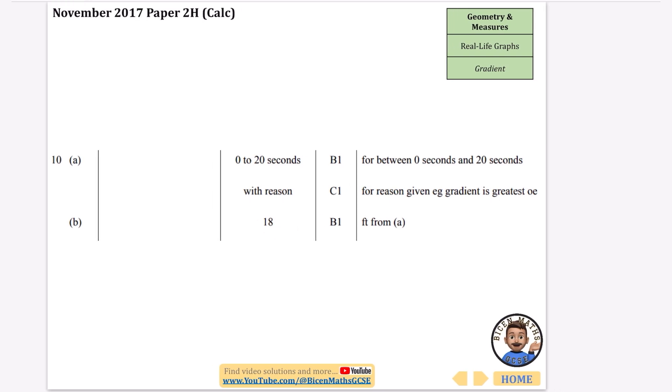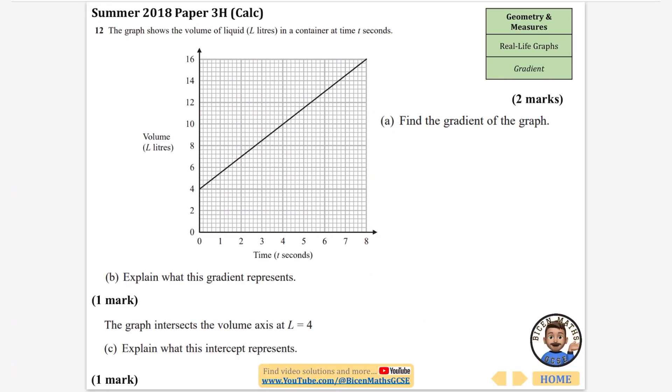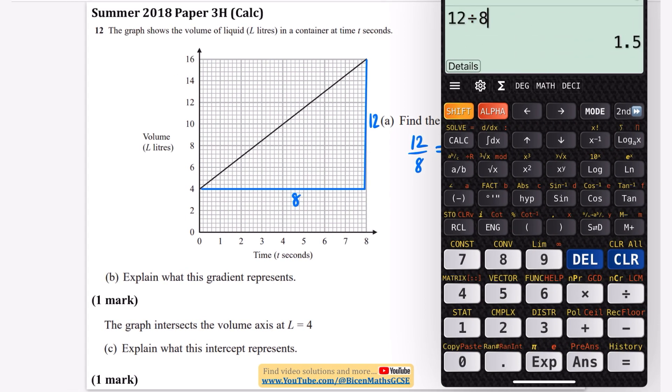This graph shows the volume of liquid L liters in a container at time t seconds. Find the gradient of this graph. The best thing to do is draw a large triangle. I'm going to draw the base part of the triangle and then the side part. This part is going from 16 to 4, so 16 minus 4 is 12. Along the bottom it's 8. The gradient is 12 divided by 8. If you put 12 divided by 8 on your calculator you'll get 1.5.